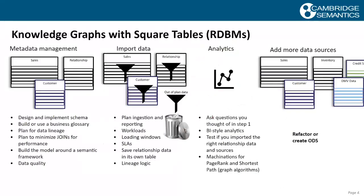If I were to do this in a standard relational database, I have many steps. I have to design and implement schema, understand which data sources to integrate, build business glossaries, plan for data lineage, and ensure that joins and analytics don't overtax the system. Then I import the data and think about workloads and how to handle relationship data — like John being married to Sue. Do I put that in a separate table or throw it away?